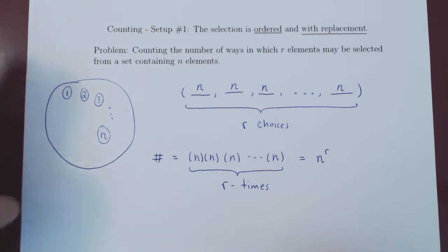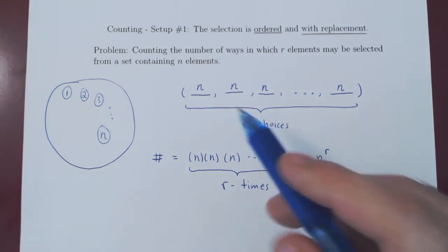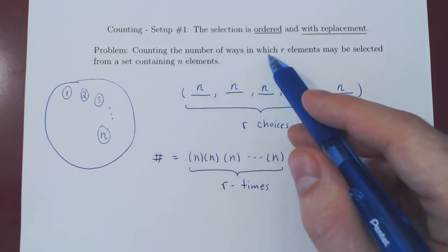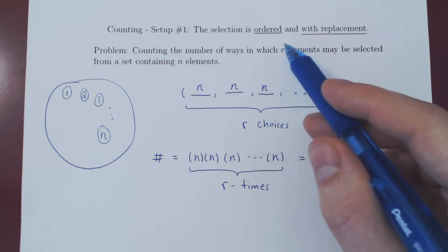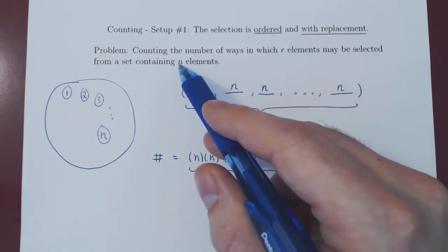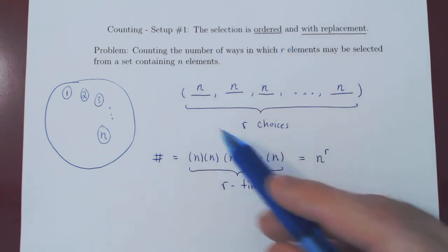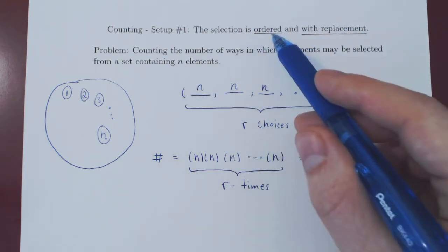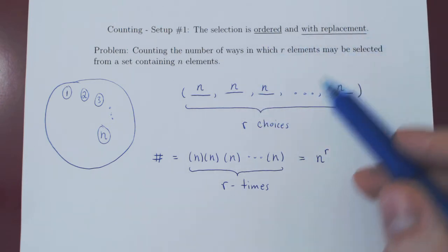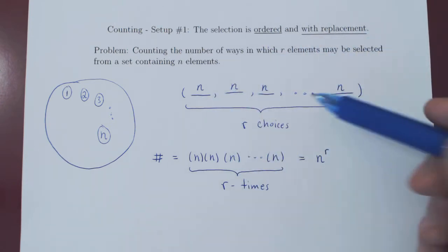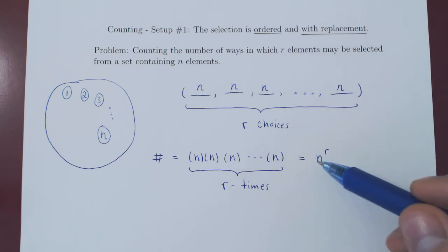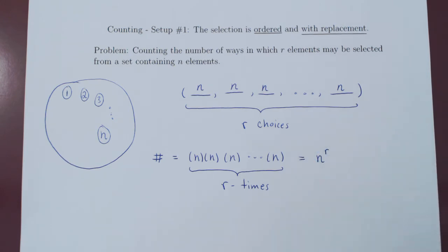If you multiply n r times, that is simply n to the r. So quite simply, when we ask in how many ways can we select r elements from a set of n elements when the selection is ordered and with replacement, the answer is simply n to the r.